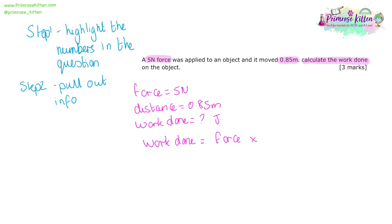Step two is to take the numbers that you have and put them into the equation — just write them underneath it. Do not rearrange at this point. This is coming straight from the examiners: please substitute numbers into the equation first and then rearrange afterwards.